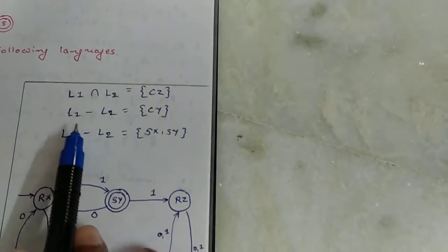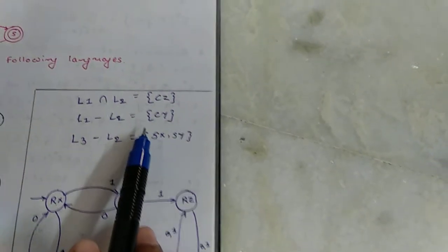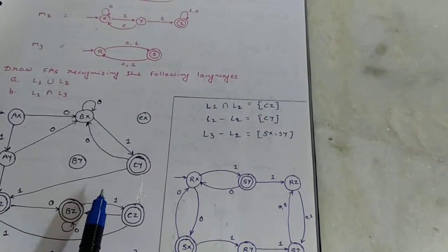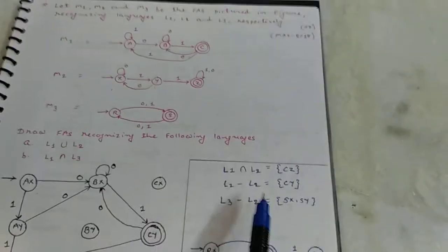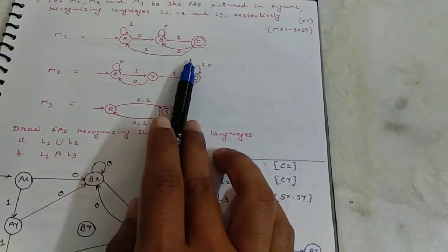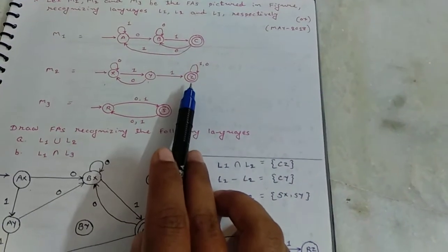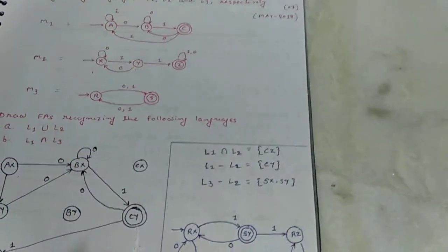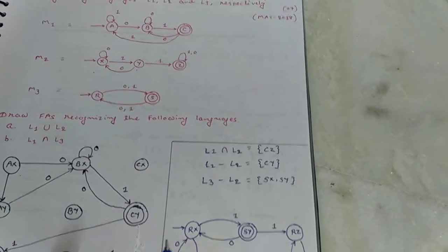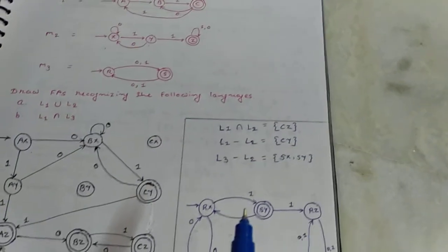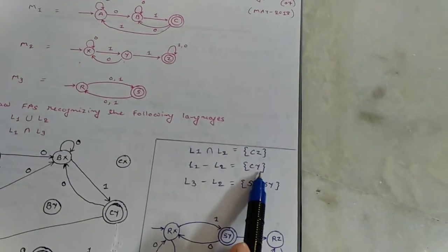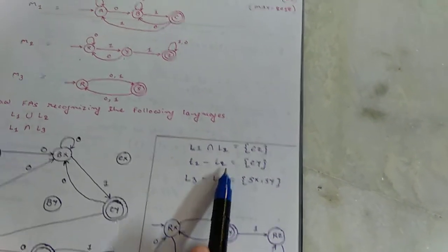The complement for L1 minus L2. Here L1 minus L2 we already draw. Then what are the final states in L1, C and L2, Z. So in L1, for L1 minus L2, only states which presents in L1 not presents in L2. So CY is the final state for L1 minus L2.